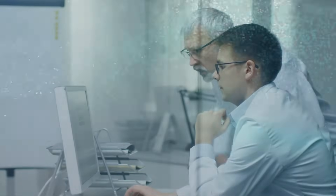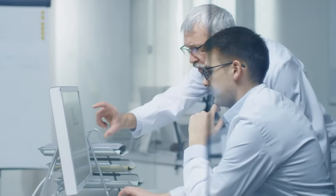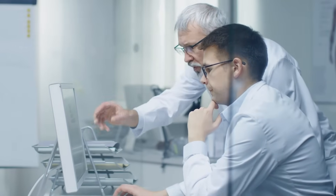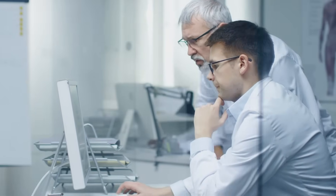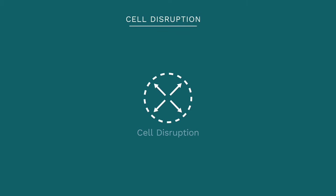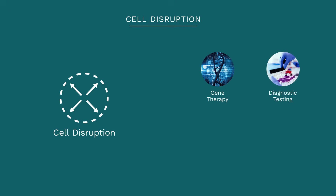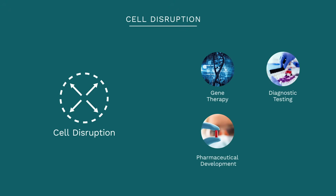Whether called cell disruption, rupture, or lysis, it means the same process. Cell disruption is a key process for many scientific breakthroughs, including gene therapy, diagnostic testing, pharmaceutical development, and vaccine production.